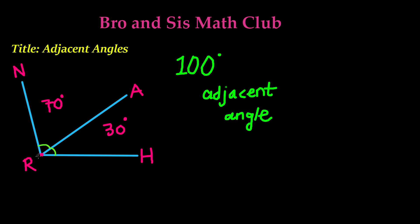So adjacent angles, remember, the common vertex and also a common side. And in this case, the common side is RA because the first angle, the 70 degree angle, is NRA. And then this next one is ARH. So as you can see, both of these angles are sharing the side of AR or RA. It doesn't matter which way you put the letters.